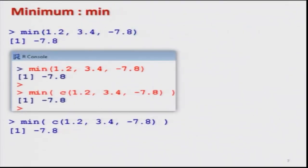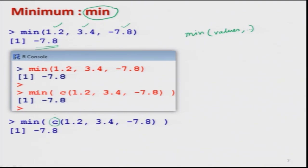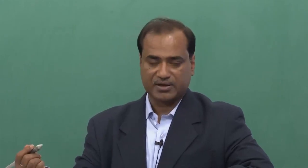Similarly, we can find the minimum. The command is min, which is the short form of minimum. The rule is the same as for maximum — write min and inside the bracket write all values separated by commas. For example, with values 1.2, 3.4, and -7.8, the minimum is -7.8. Alternatively, combine all 3 values using the C operator and then use the function min to get the correct minimum value.